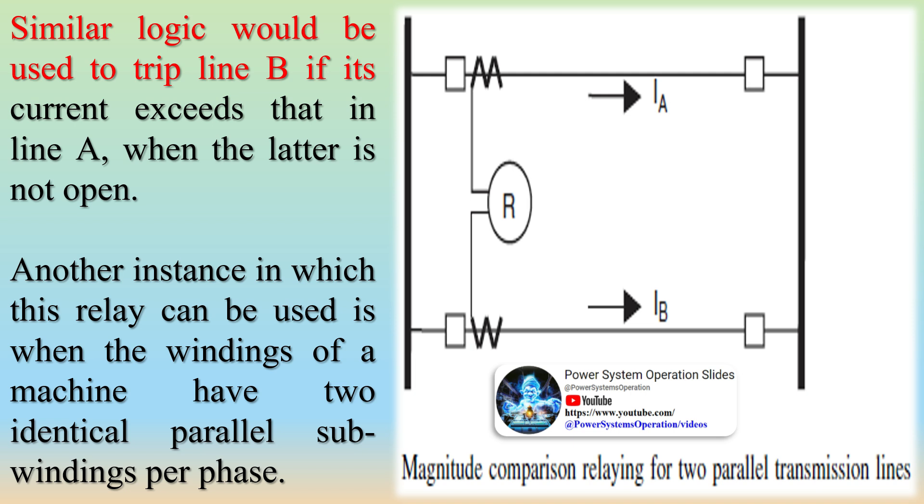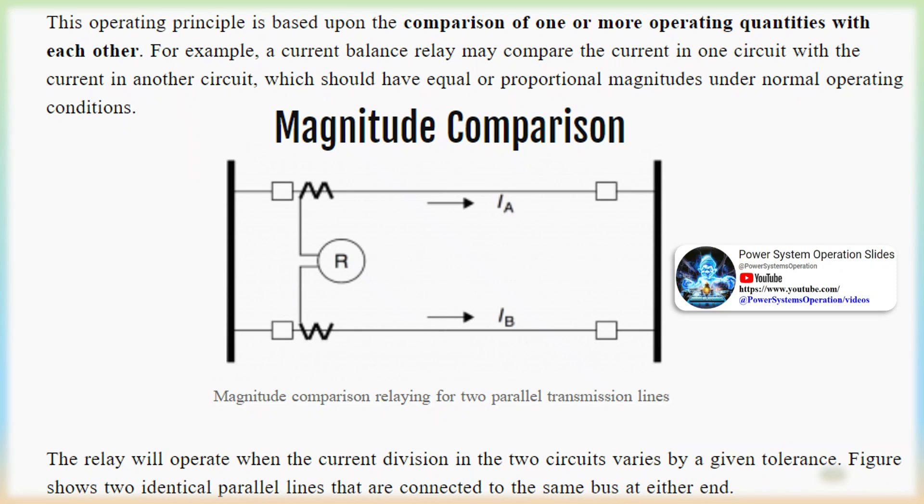The operating characteristics of an overcurrent relay can be presented as a plot of the operating time of the relay versus the current in the relay. It is best to normalize the current as a ratio of the actual current to the pickup setting.